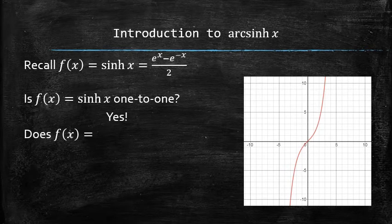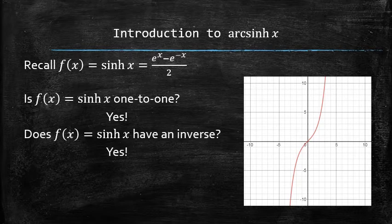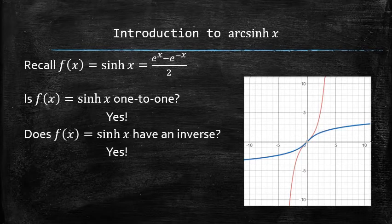Does this function have an inverse? The answer is also yes, because all one-to-one functions have an inverse function. And here is what it looks like. We call this function the hyperbolic arcsine.